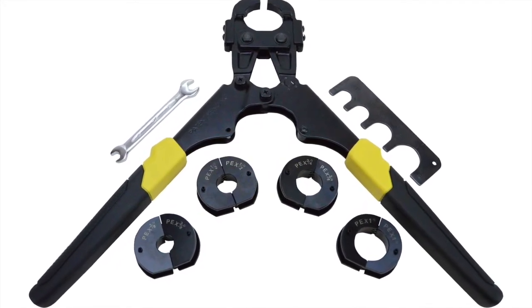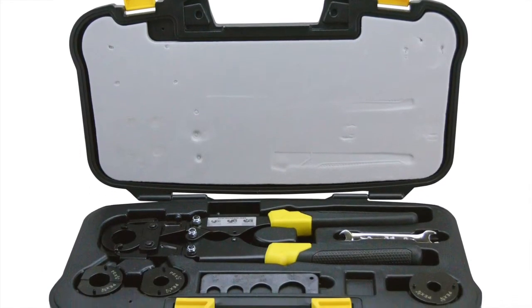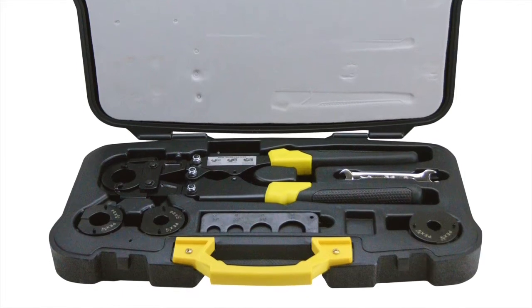The Apollo PEX multi-head crimp tool kit includes four sets of crimping jaws, a go-no-go gauge, and an adjustment wrench all packaged in a sturdy carrying case.